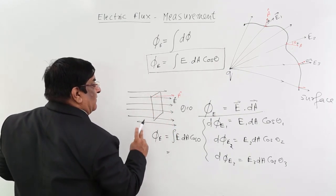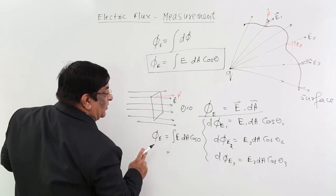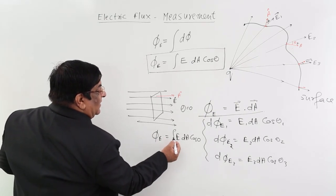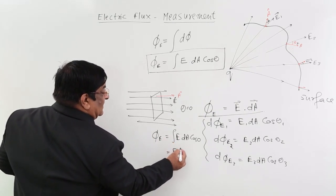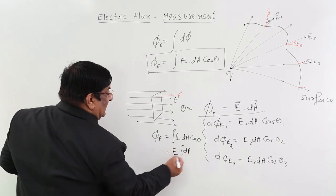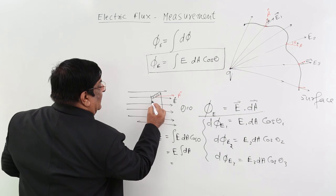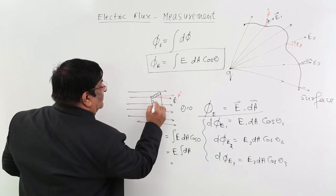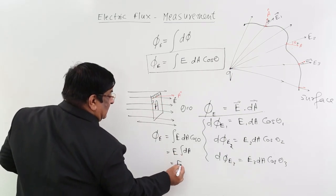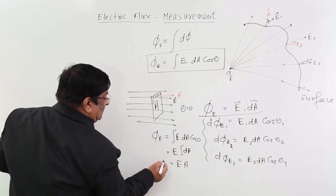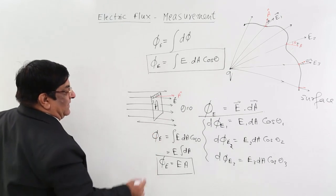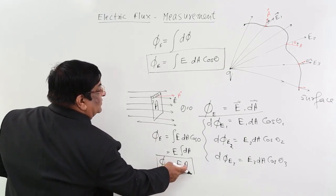Now, this is a uniform electric field. It has the same value at every point. It can be treated as a constant and a constant comes out of the integration. Now, it is integration of dA. Add up all the dA, what will we get? Area. So this is E into A, this is flux and this is our basic formula what we had done. So flux E into A.